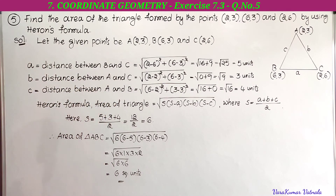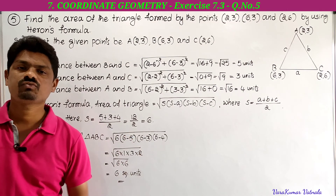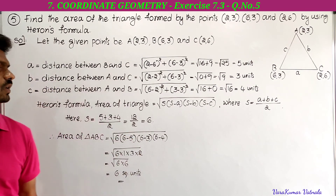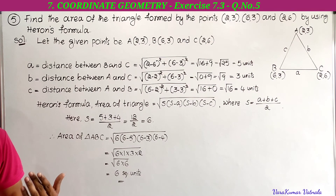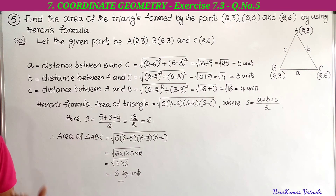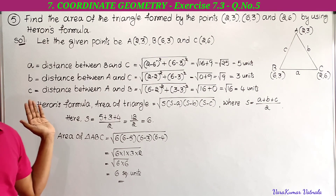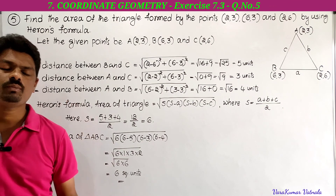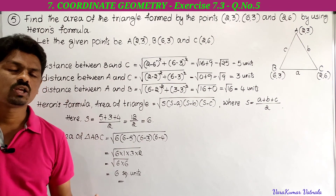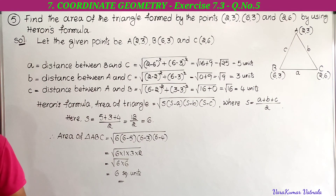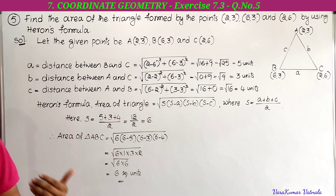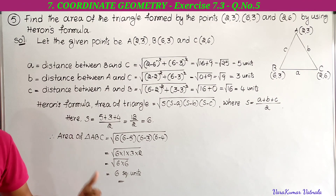This is the area of the triangle with the given points using Heron's formula. This is the fifth problem in exercise 7.3 — there are totally five problems and we have completed all five. That's all for today's class; we will meet in the next class with another problem. Thanks for watching.